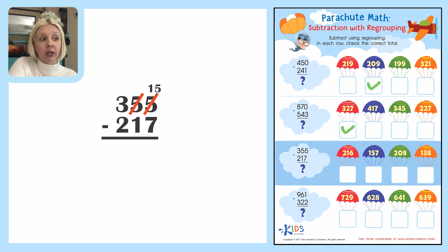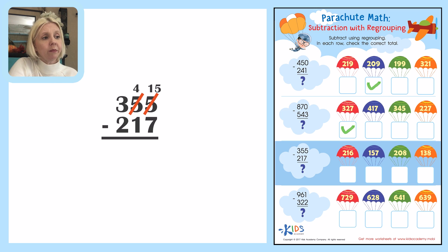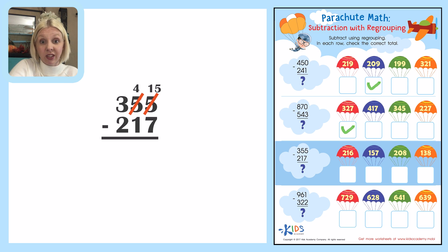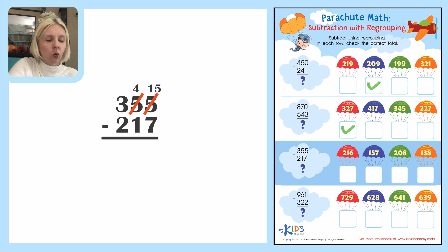The way I can do that is by taking ten away from the tens digit, so I have to turn that five into a four — don't forget to change that. Now I need to do fifteen minus seven. That's a big number, so I'm actually going to draw it out to the side to make sure I get it correct. I'm going to draw fifteen dots.